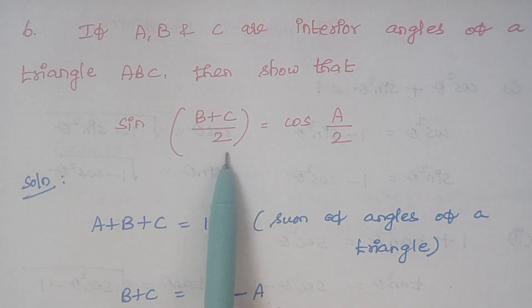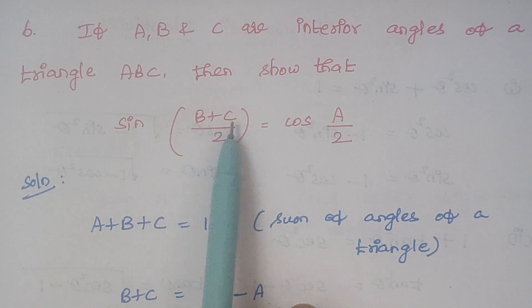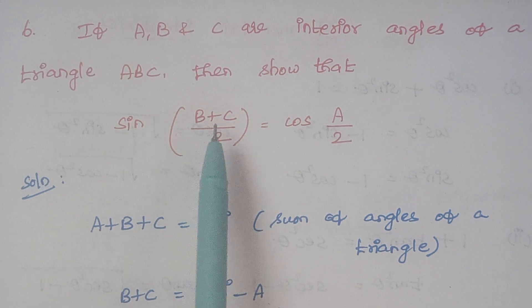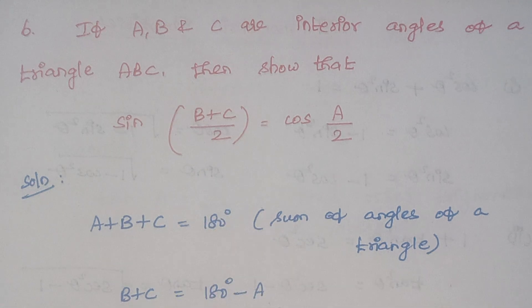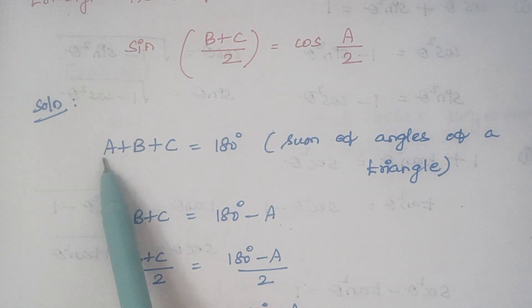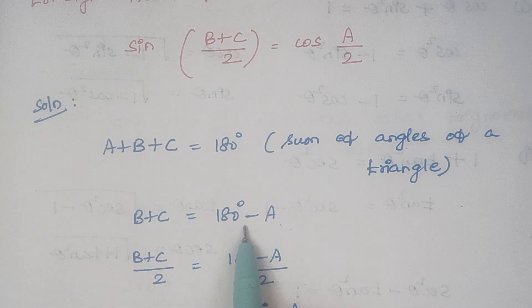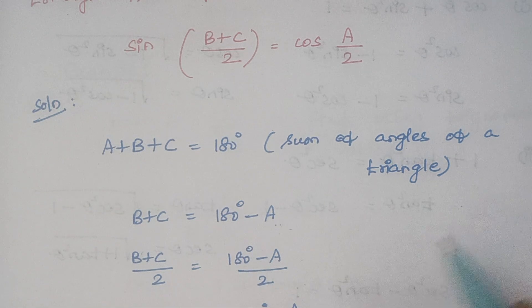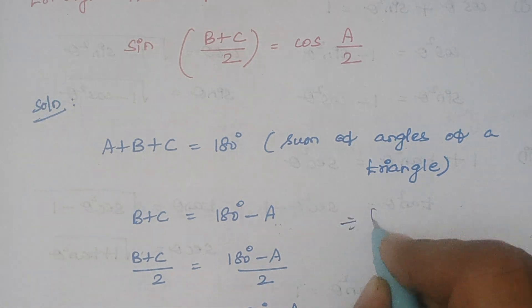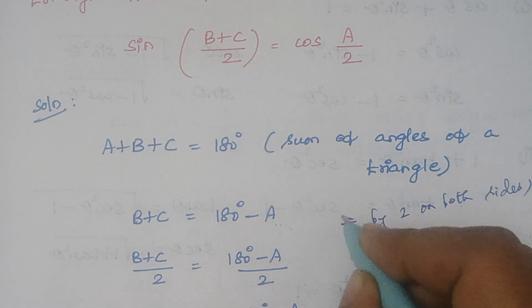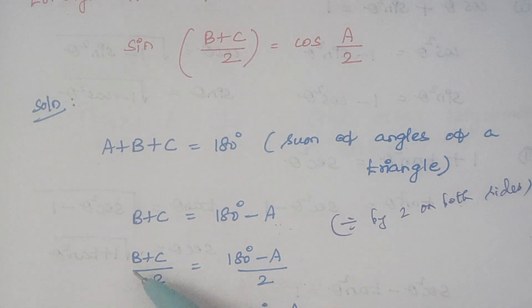We need to frame the expression with (B plus C) divided by 2. As a first step, I keep B plus C together and move A to the right hand side — so B plus C equals 180 minus A. The next step is to divide both sides by 2, giving (B plus C) divided by 2 equals (180 minus A) divided by 2.